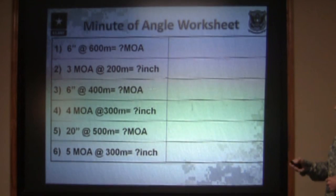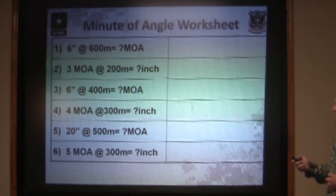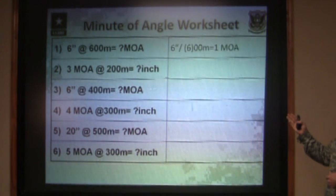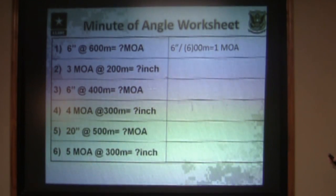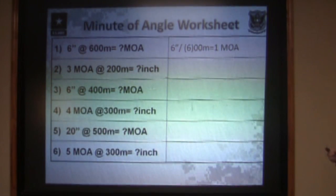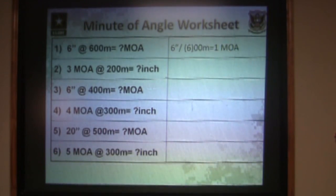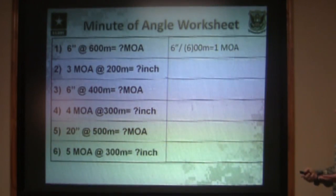Six inches at 600 meters is how many minutes of angle? You take your six inches divided by the six of your yardage, and that equals one minute of angle. So one MOA at 600 meters is six inches.